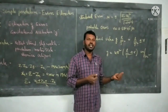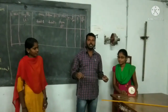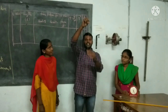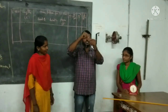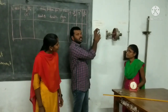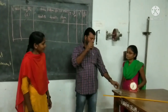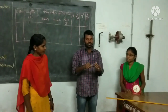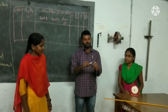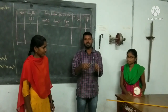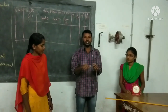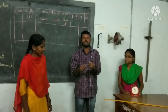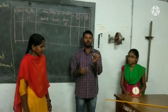Now let us see the experimental procedure. This is the simple pendulum — a metal bar suspended with a thread from a support. First, use vernier calipers to find the diameter of the metal bar. The diameter is around 3 centimeters, so the radius is diameter divided by 2, which is around 1.5 centimeters. Calculate the diameter first, then find the radius.